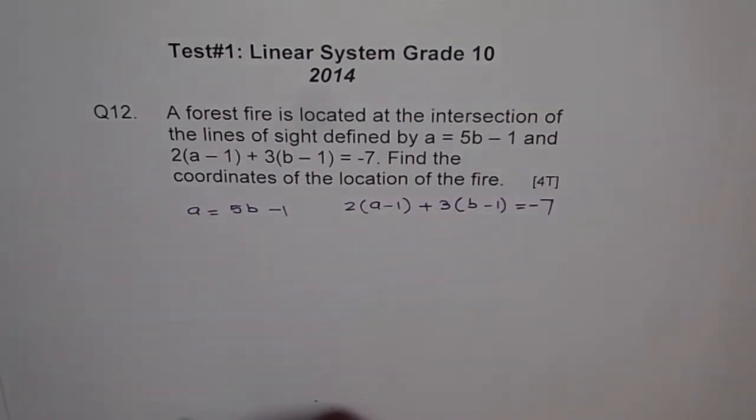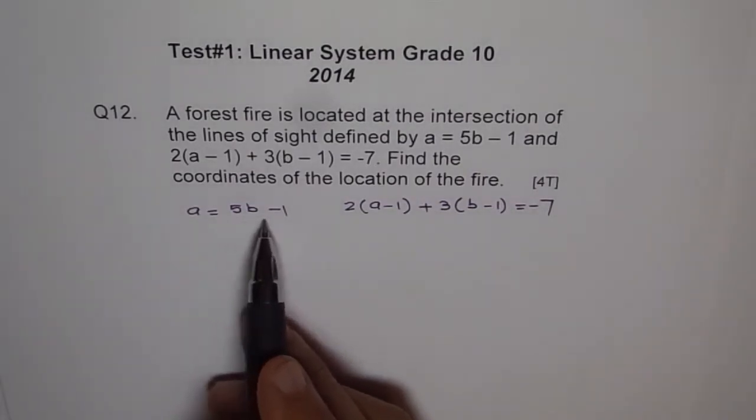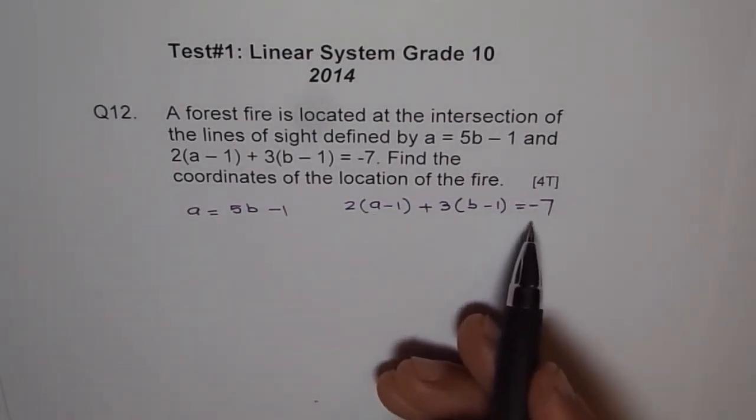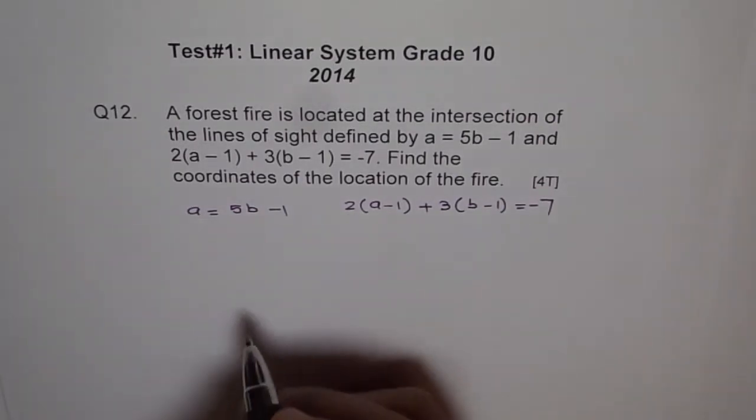These are our two equations. What we can do is A is given as 5B minus 1. We can substitute and then find B. Let us substitute this in second equation.